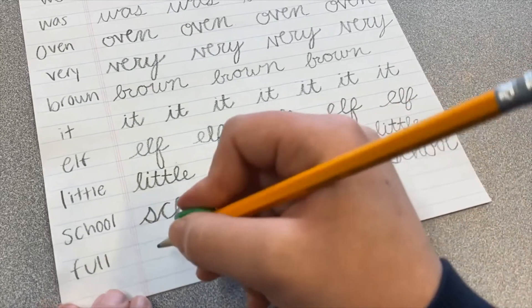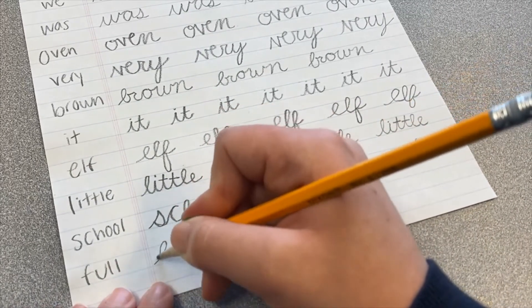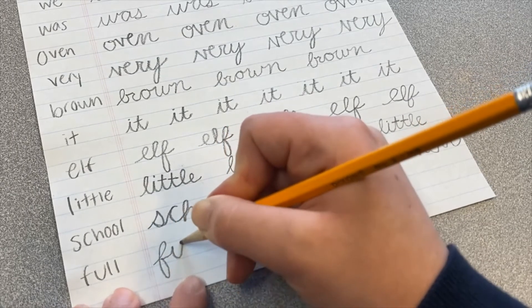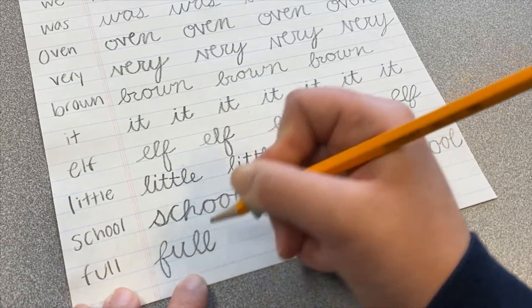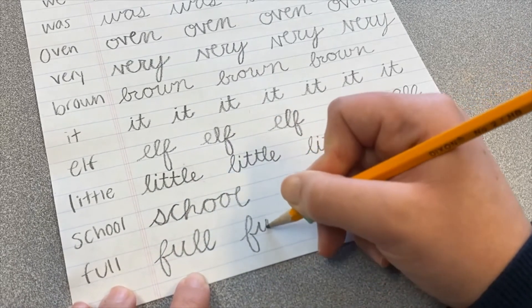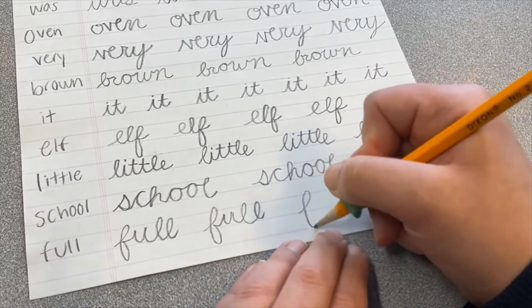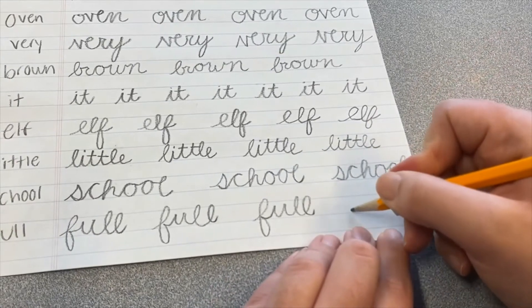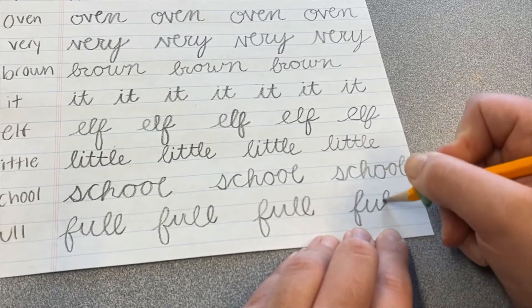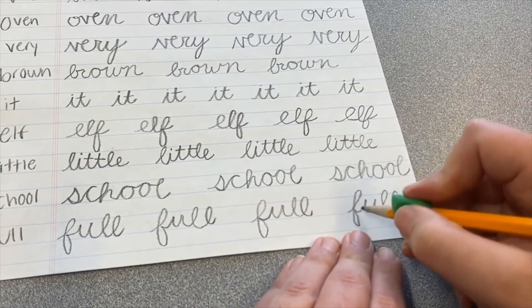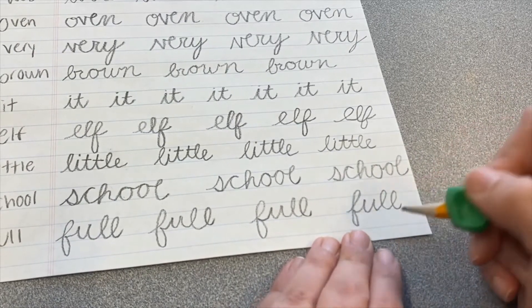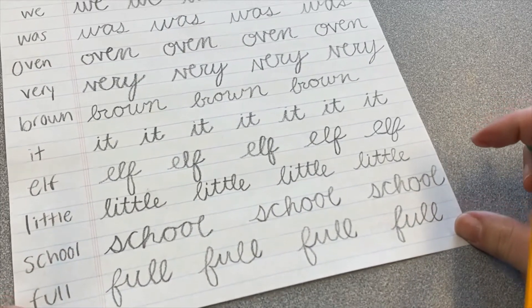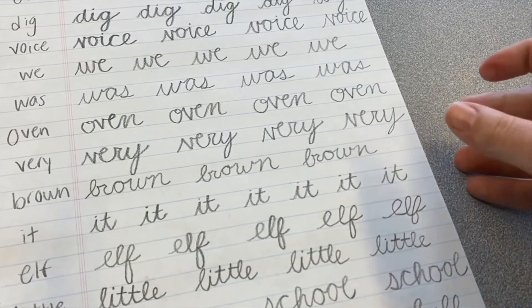The last word for this page is the word full, which is funny because our page is full. So we've got our F, loop, loop, in and out into the U. And then we'll make our L, L. F, U, L, L. It is easy with the F to not meet that loop back in the middle, but it is important to do that because it makes it a little bit more distinct that it is an F.